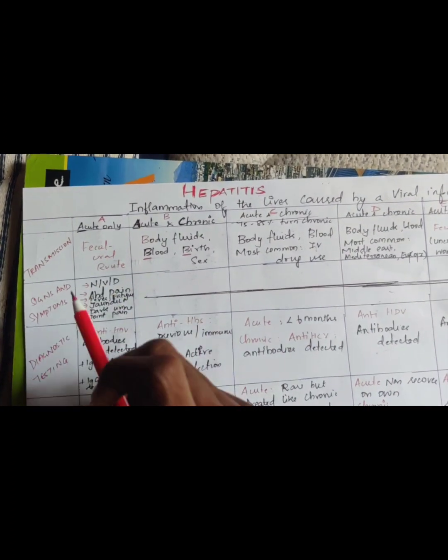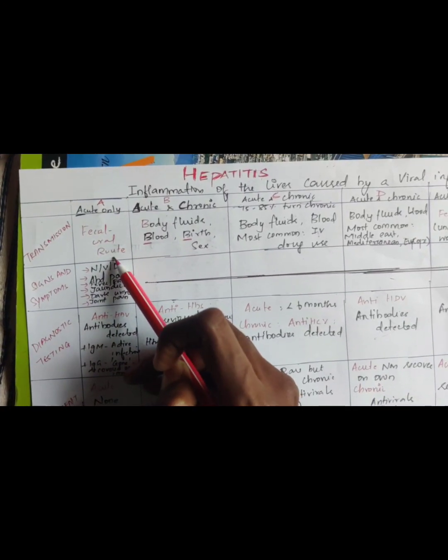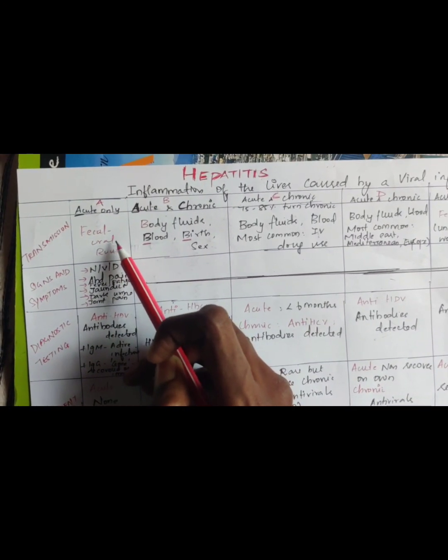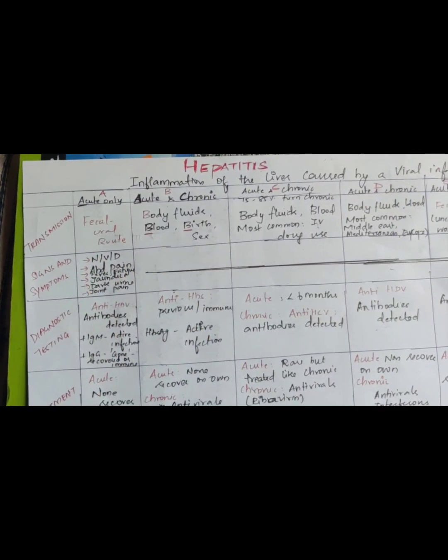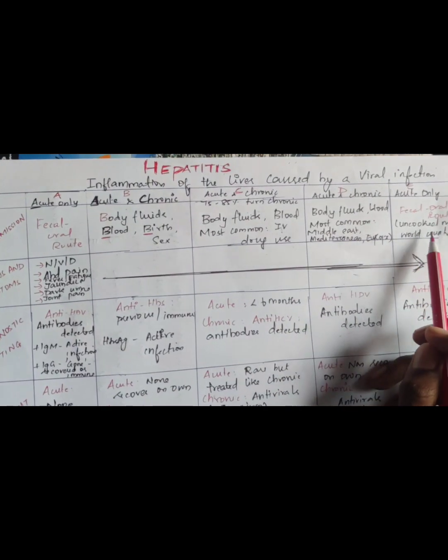This is transmission. Hepatitis A transmission is feco-oral route. So improper hygiene is affected by the people. Hepatitis E is both similar, uncooked meat.